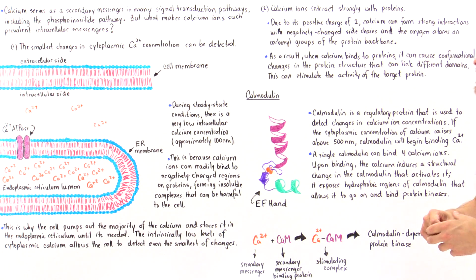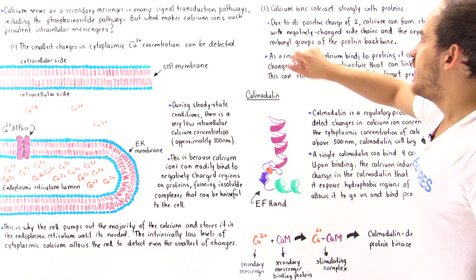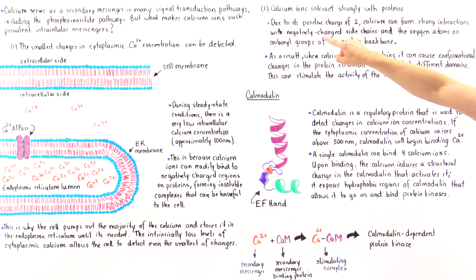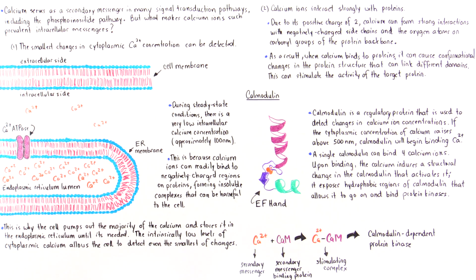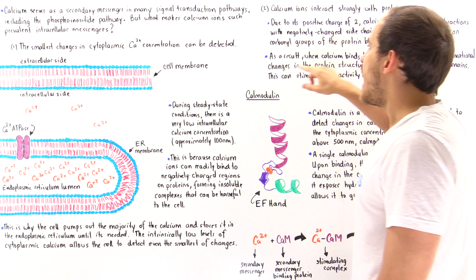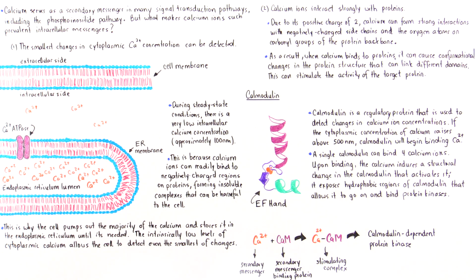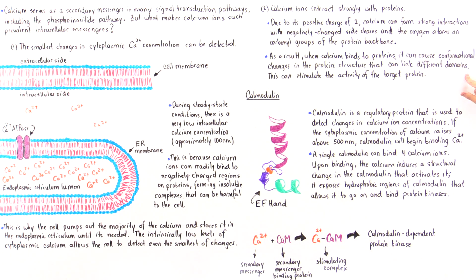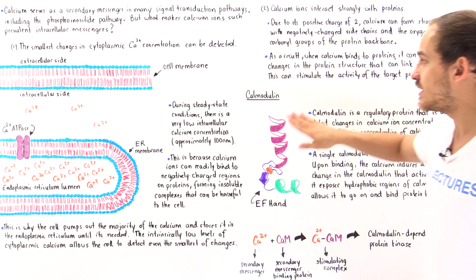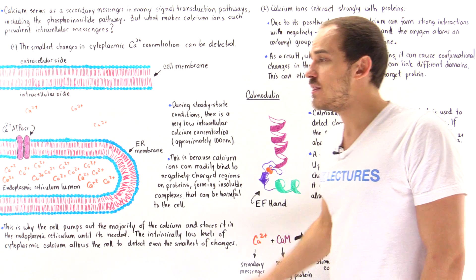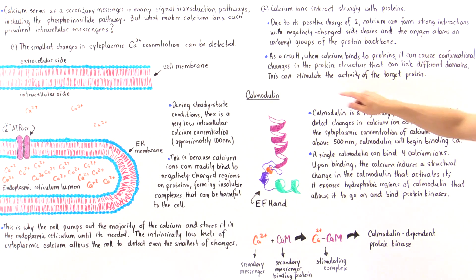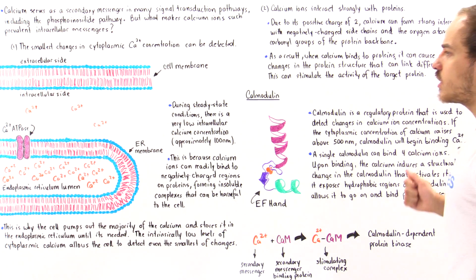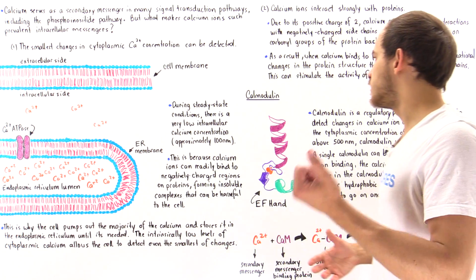These conformational changes can bring different domains in the protein together and expose important hydrophobic regions of the protein, allowing that protein to interact with other proteins and stimulating many different types of reactions in the cell. Due to a positive charge of 2, calcium ions form strong interactions with the negatively charged side chains of proteins as well as the oxygen atoms on the carbonyl groups of the protein backbone. This can activate target proteins, target enzymes, target pumps, and so forth.